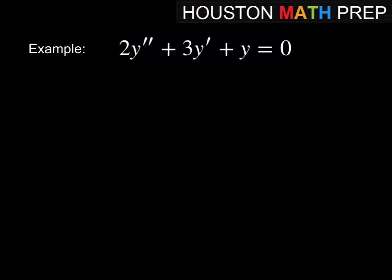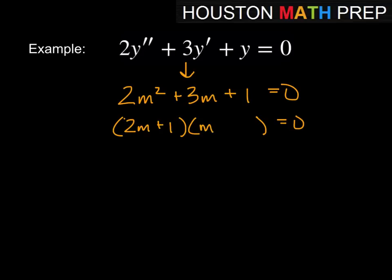Here's another: 2y'' + 3y' + y = 0. So we'll go ahead and change to the auxiliary equation. 2m² + 3m + 1 = 0. And we factor this here. This is factorable. So we'll get (2m + 1)(m + 1). Set each factor equal to 0 there.